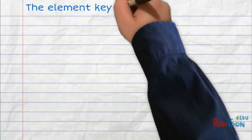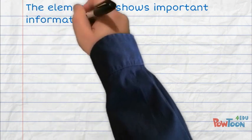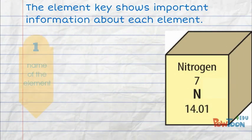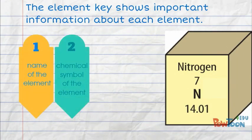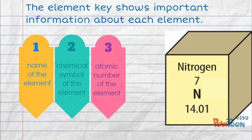The element key shows important information about each element, including the name of the element, the chemical symbol of the element, the atomic number of the element, and the atomic mass of the element.